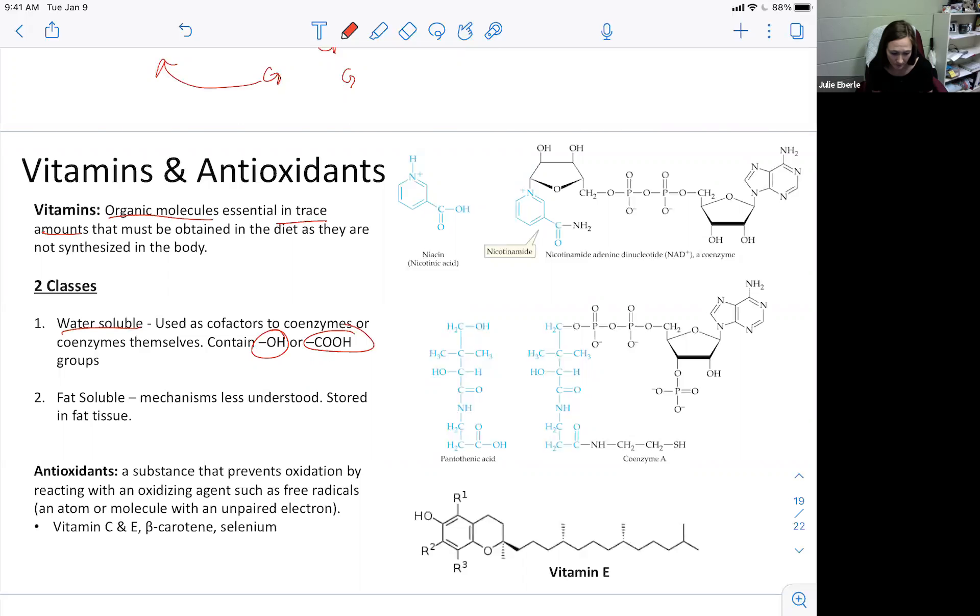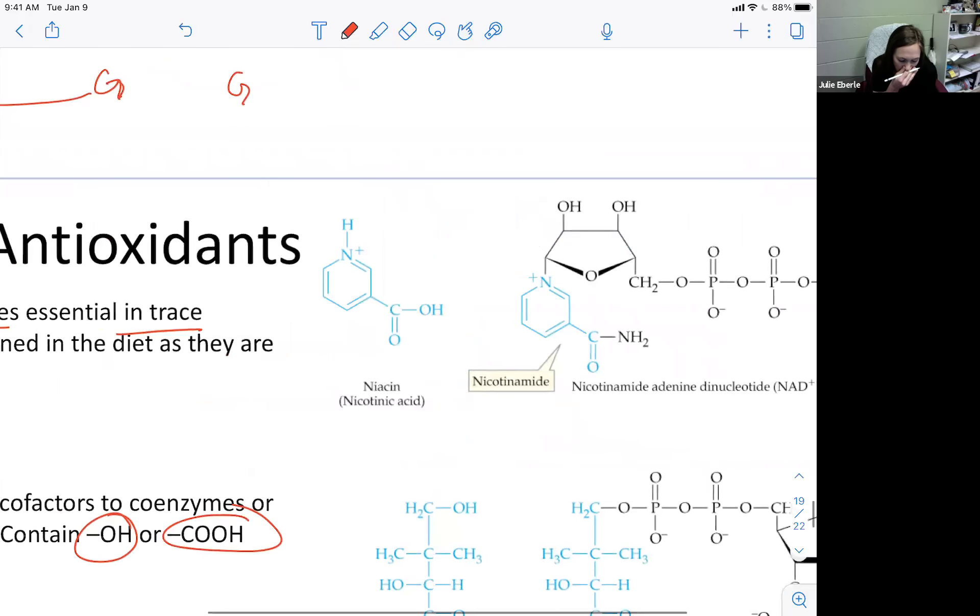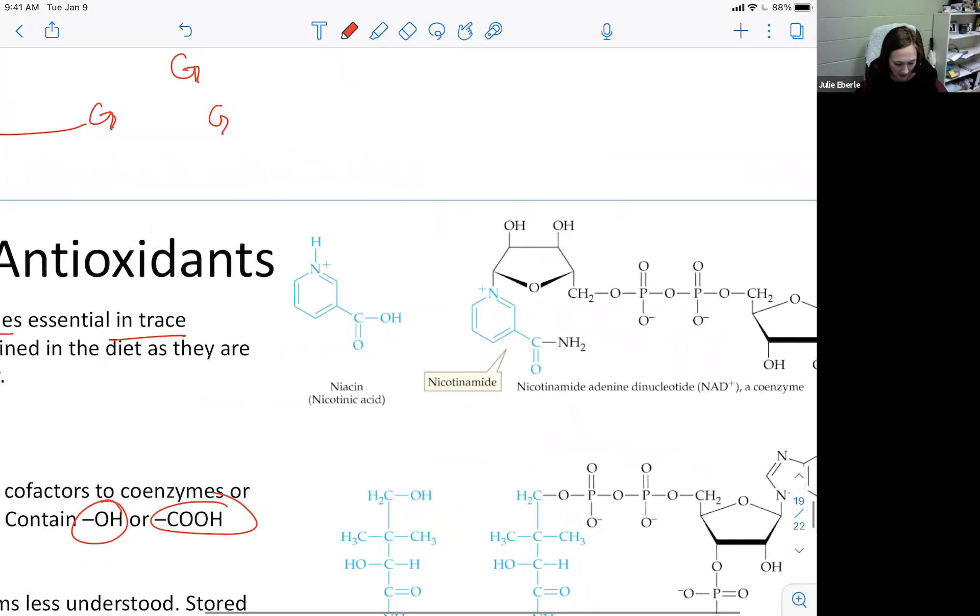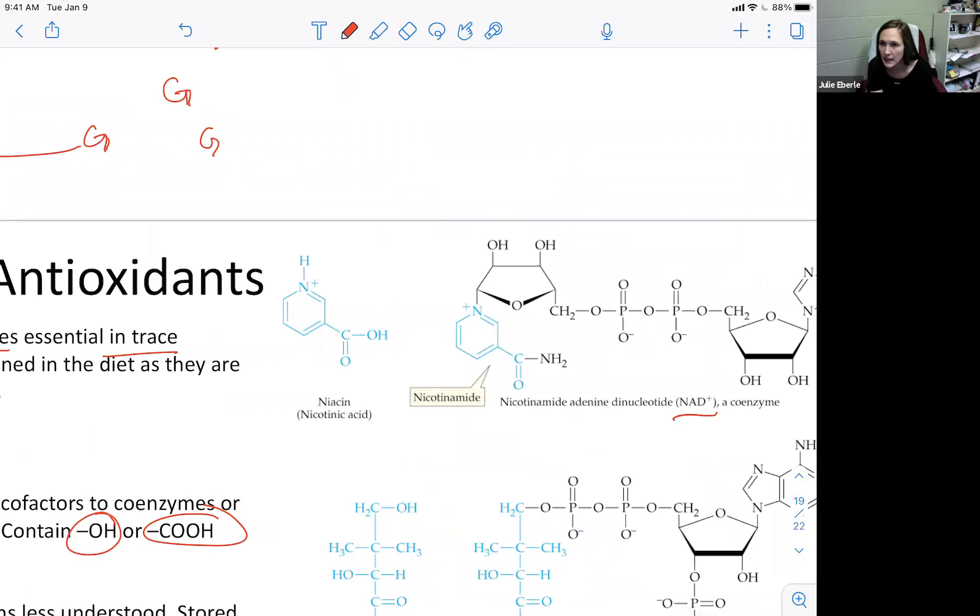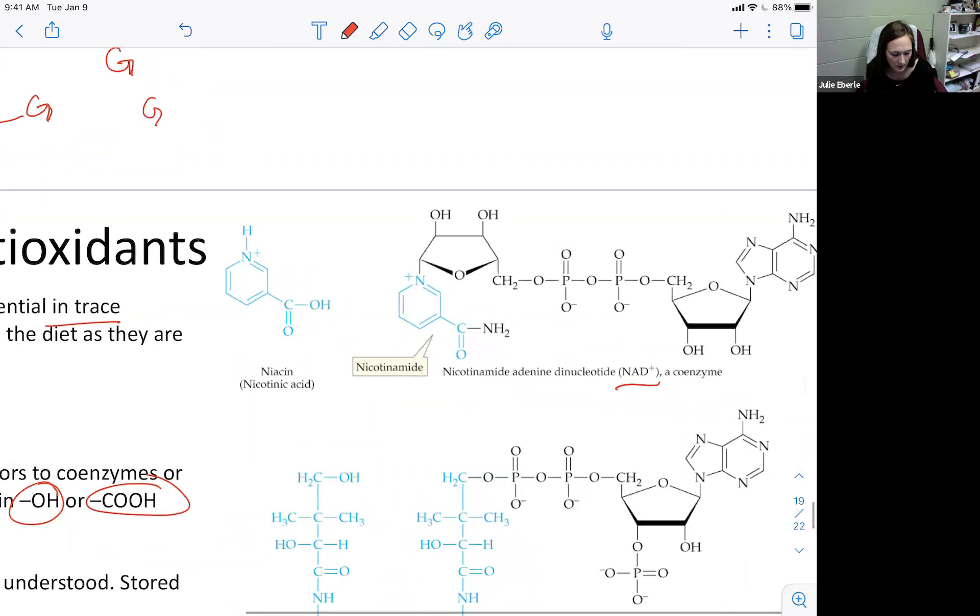Niacin is a cofactor to the coenzyme nicotinamide adenine dinucleotide, lovingly known as NAD. We're going to really get to that tomorrow. NAD is a coenzyme in the citric acid cycle and then it feeds right into the electron transport chain, which is what our bodies use to make ATP. You can see where niacin fits into the molecule for NAD+.